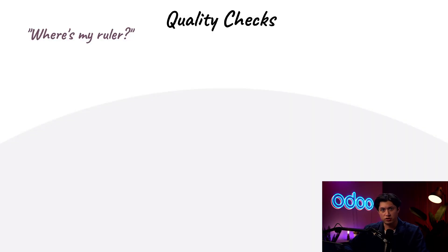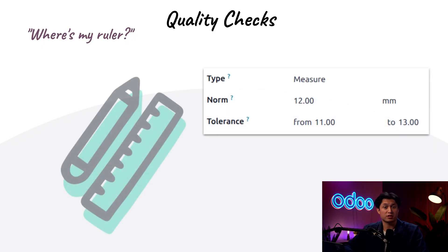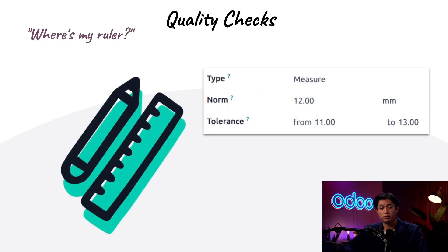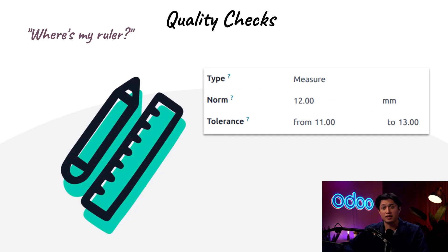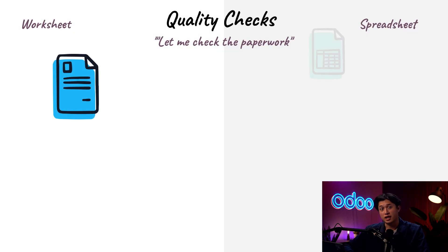Then we have the measurement check. Here, products are tested against specific specifications — this can include dimensions, weight, or even something as precise as the torque on a bolt. For instance, we can check the height of a finished table or the depth of a desk drawer. When configuring the initial check, a tolerance is provided, and anything outside that tolerance is considered a failure.